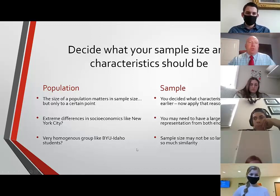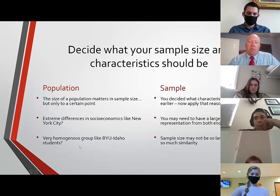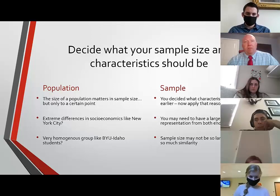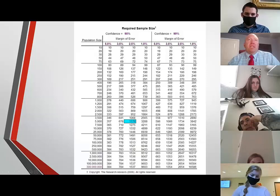Thinking about how homogenous your group is — we talked about that with the characteristics of the population. A homogenous group probably doesn't need as large a sample size. With 26,000 students at BYU-Idaho, 30 is probably not enough, but maybe 150 is, even though when we get to the sample size chart you'll see they would recommend a much larger sample.